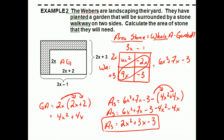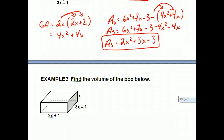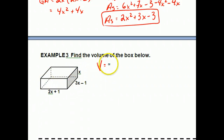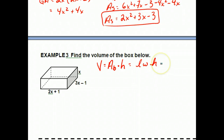Let's finish with a couple more examples. This next one I'll start for you and leave as an exercise: find the volume of a box. The formula is volume equals area of the base times the height, or length times width times height. Think about what you need to multiply together and find the total volume.